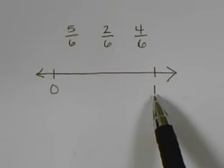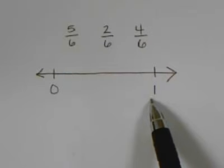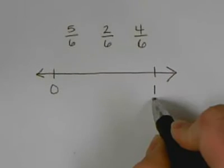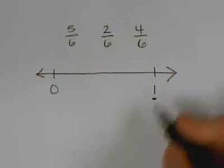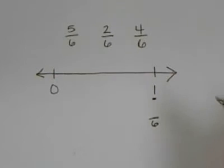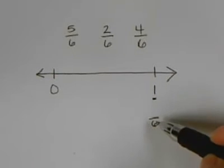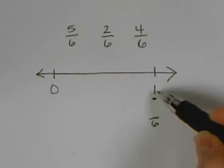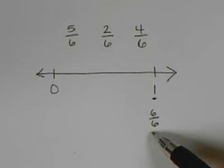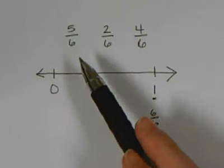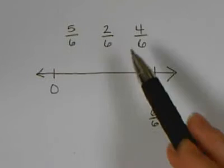The next thing that we need to do is place one whole as a fraction. So if we have one whole and we need it to have the same denominator of 6, we need to figure out what one whole would be as a fraction with a denominator of 6. Students should know that one whole is equal to 6/6. So now that we have our place markers of 6/6 and 0, we can figure out where to place these three fractions.